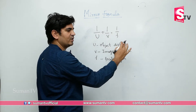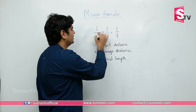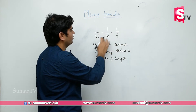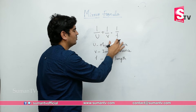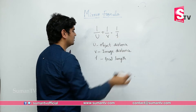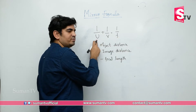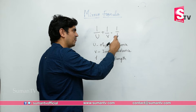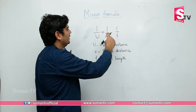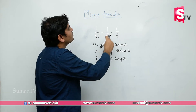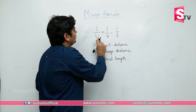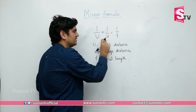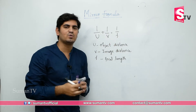Any of two values we will be substituting in this equation and then we will be getting the remaining one value. You will be given object distance and image distance, or object distance and focal length, and asked to find image distance.